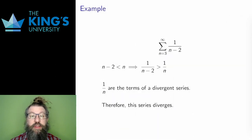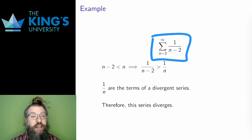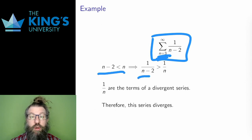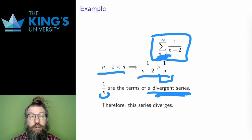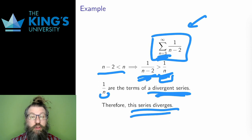Here's an example. Consider the sum of the terms 1 over (n minus 2). I have to start this at n equals 3 to avoid dividing by 0. Since n minus 2 is less than n, if I take reciprocals I reverse the inequality, so 1 over (n minus 2) is larger than 1 over n. But 1 over n is the terms of the harmonic series, and the harmonic series is divergent. Therefore, I have terms which are larger than a divergent series, and everything is positive, so comparison applies: larger than a divergent series means the new series will also diverge.